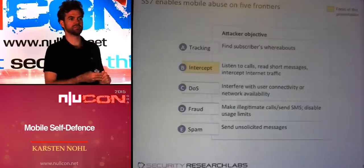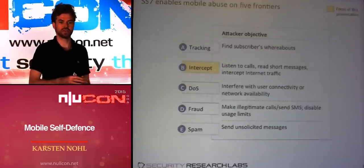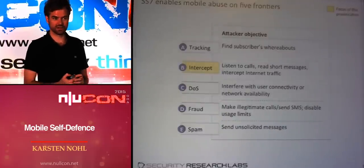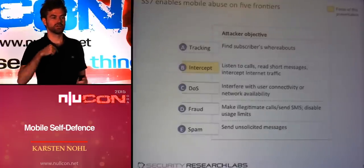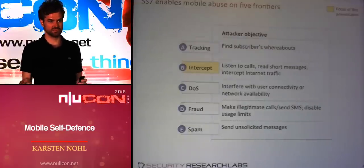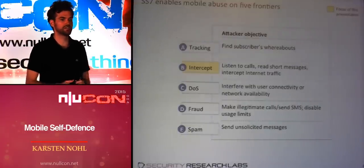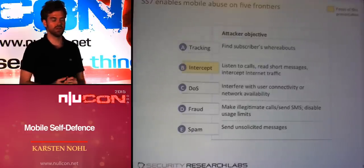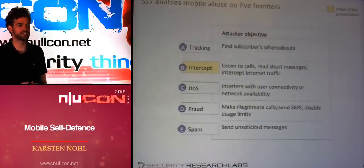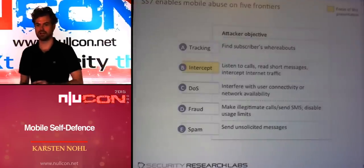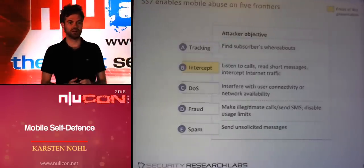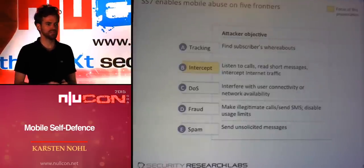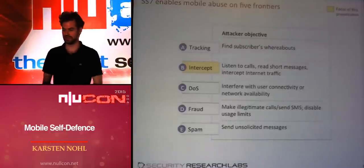We only looked at tracking briefly and then focused on intercept. I should note this is not exhaustive — aside from intercept, there are possibilities to cut subscribers off from the network selectively for incoming or outgoing calls, prevent them from receiving SMS, or kick them out until they reboot. More interestingly, because more incentivized, there are several fraud techniques: conducting phone calls or sending SMS charged to somebody else, or removing limitations — like a prepaid card that never stops working. And obviously you can use it for SMS spam. Those three areas are reserved for another talk; there was a talk at 31C3 by Tobias Engel that covers these in more detail.